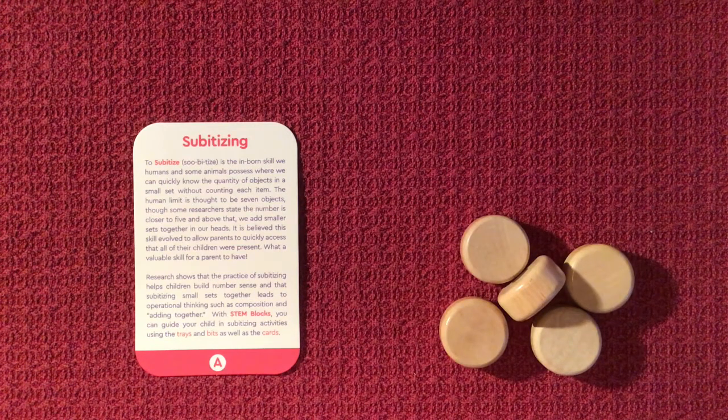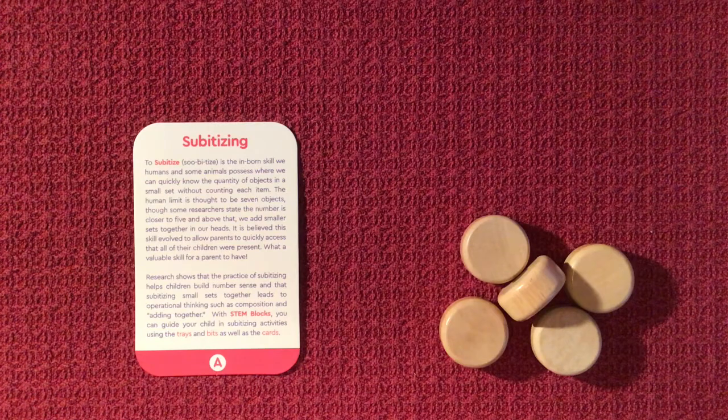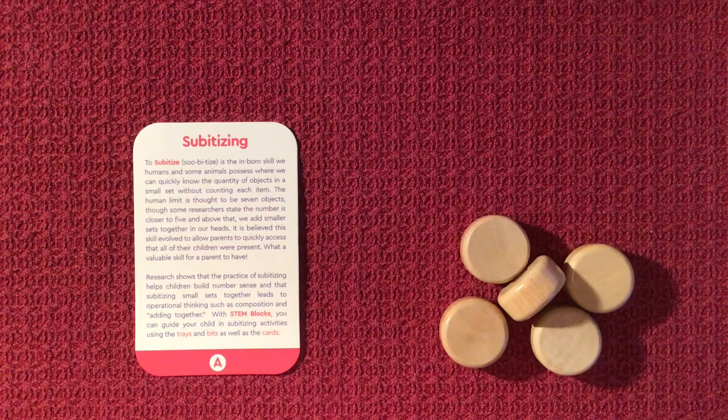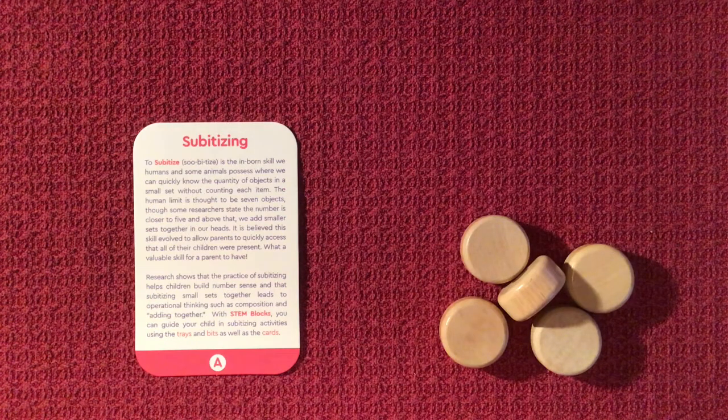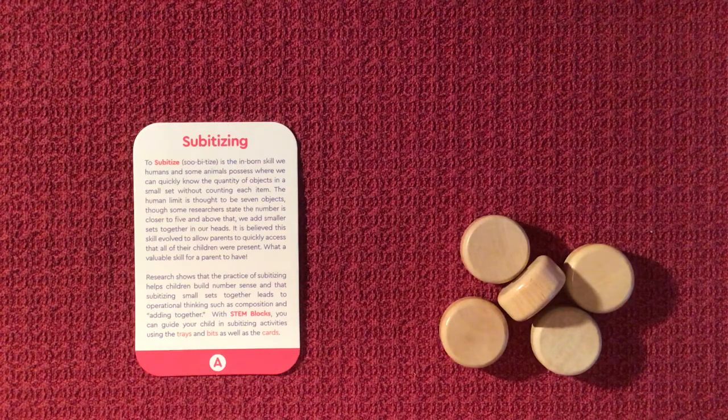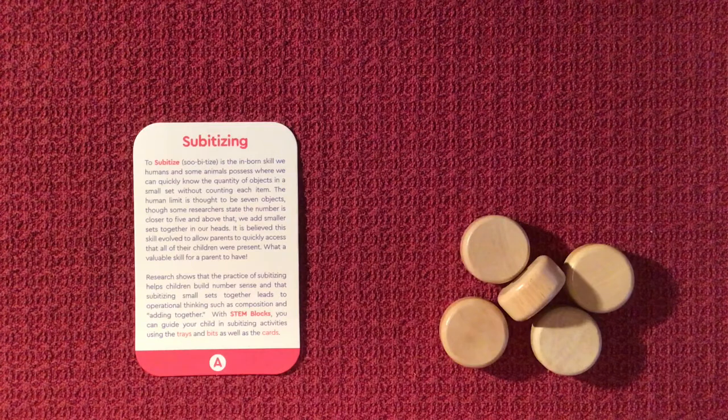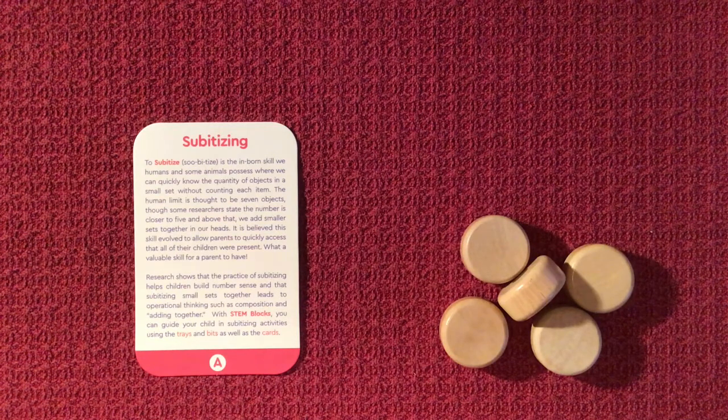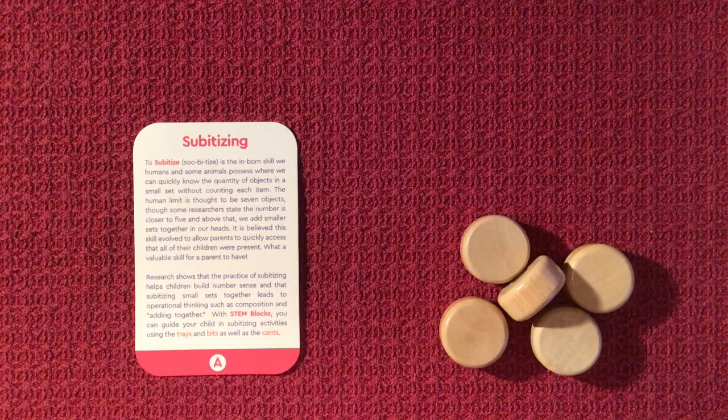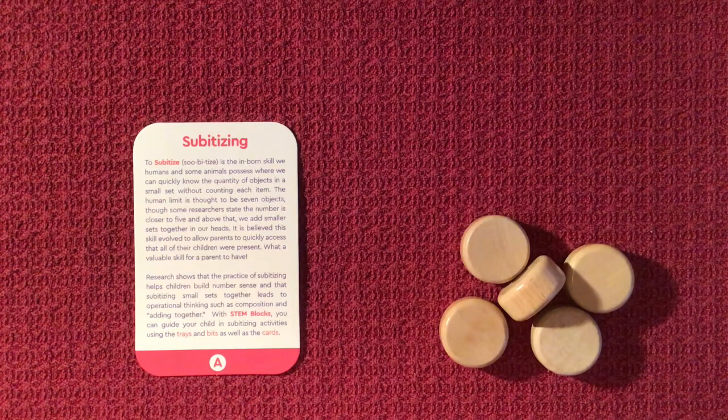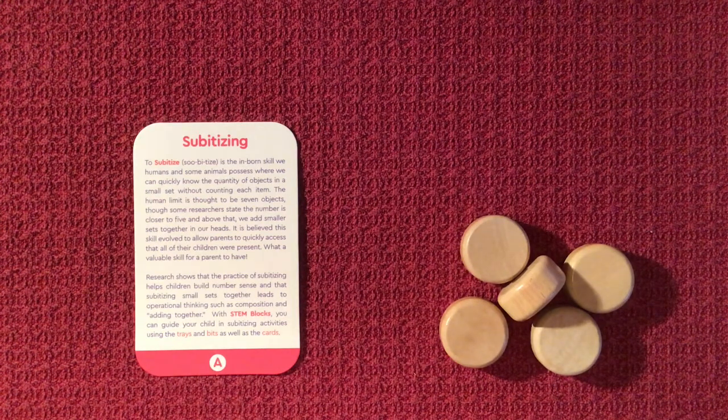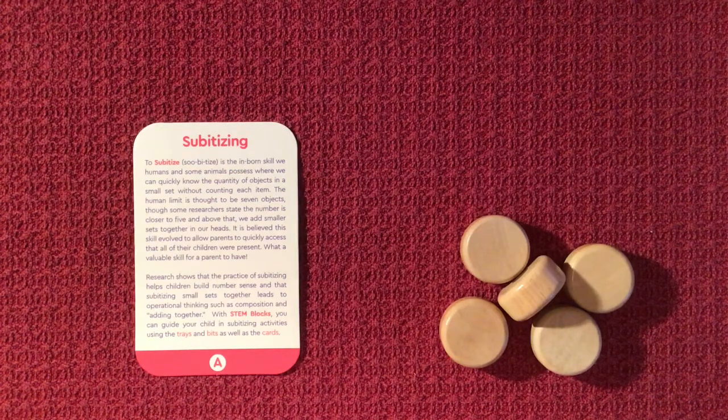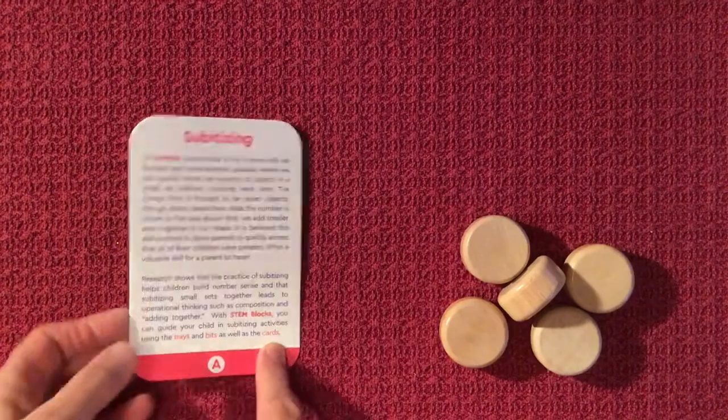It is believed the skill evolved to allow parents to quickly assess that all of their children were present. What a valuable skill for a parent to have. Research shows that the practice of subitizing helps children build number sense and that subitizing small sets together leads to operational thinking such as composition and adding together. With stem blocks, you can guide your child in subitizing activities using trays, bits, as well as cards. Let's try some subitizing together.